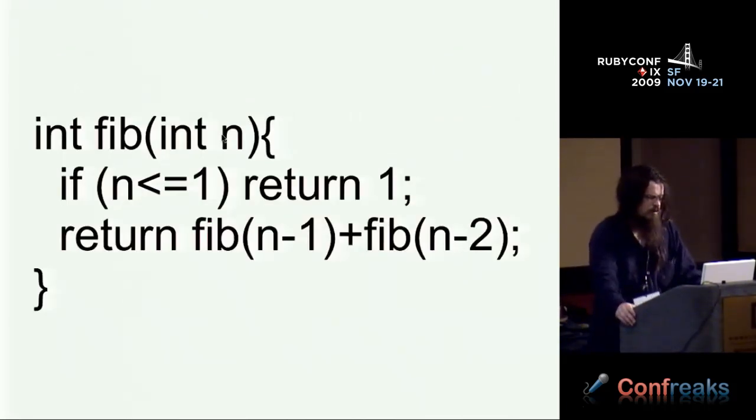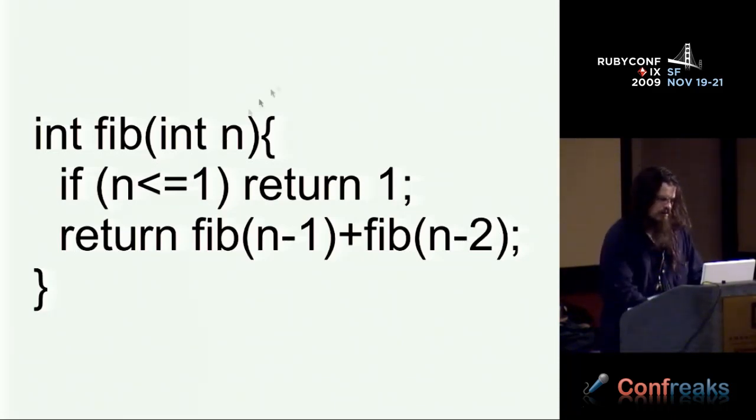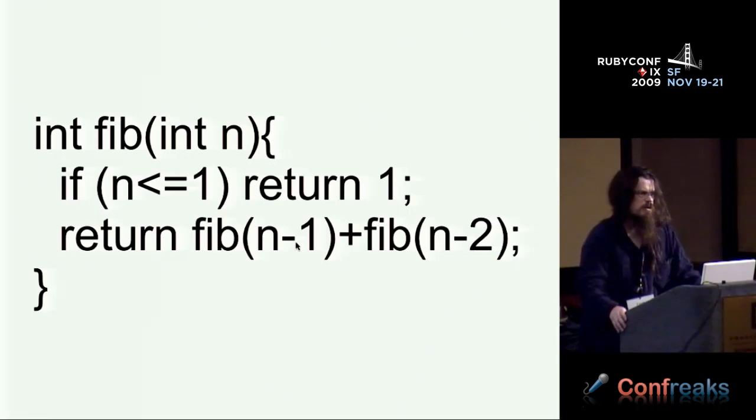So before we talk about Ruby, let's talk about an efficient language. Here's some C code. This is a Fibonacci calculator. C is efficient because the compiler knows what the types of things are. When it comes time for the compiler to emit the instruction for this minus operator, it knows that the types of its operands are integers, and so it can emit the integer version of the minus instruction.